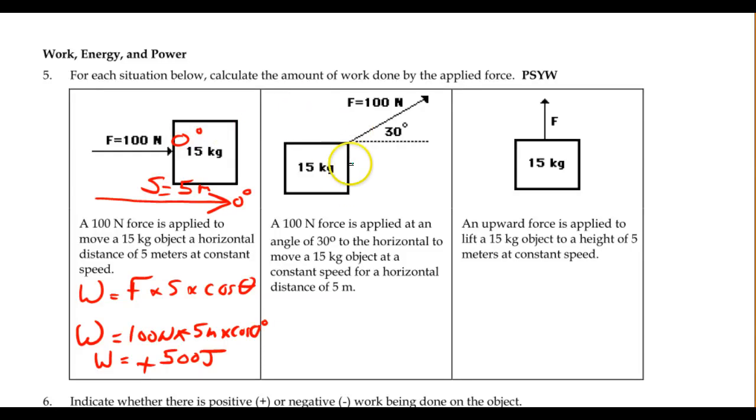And in the second one, again, I'm going to assume it's moving over a horizontal surface, so the displacement is also 5 meters. But we have a difference here. This time, the angle between the two is not 0, but 30 degrees.